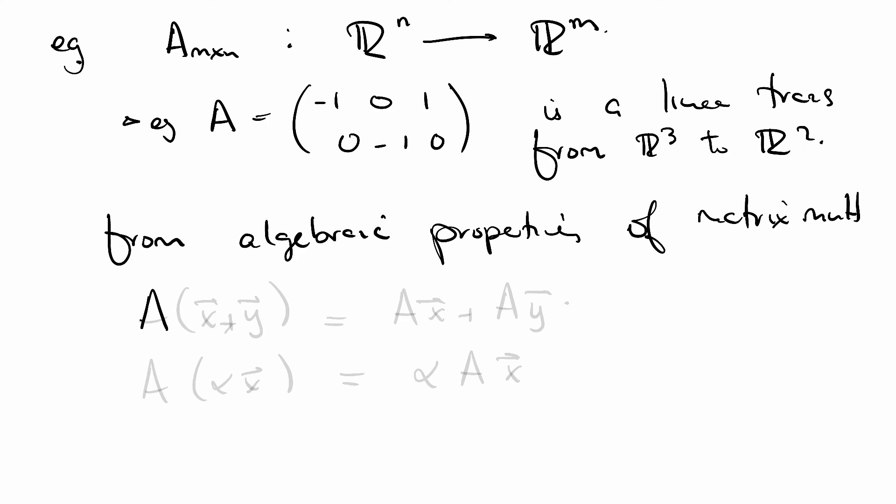We know from way back that A applied to x plus y is A x plus A y, and we also know that A applied to alpha x is alpha A x. So there you go, it's a linear transformation. All we've done so far is given the definition of a linear transformation and a few familiar and unfamiliar examples. This was our introduction.